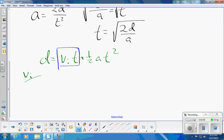I do that by subtracting one half a t squared from each side. So I get d minus one half a t squared is equal to vi t.